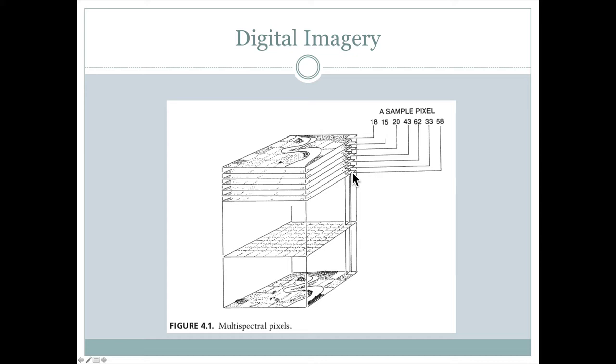From each of those portions of the electromagnetic spectrum, the intensity of that light is going to be recorded on each of the pixels in each of these images here. So we kind of have this stack of information where each band represents a different portion of the electromagnetic spectrum.